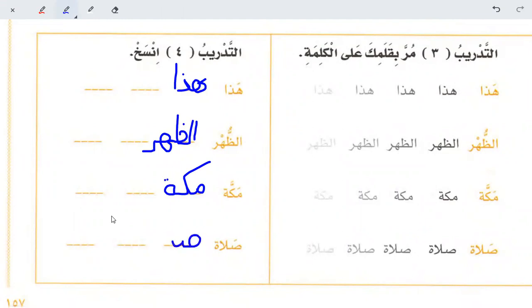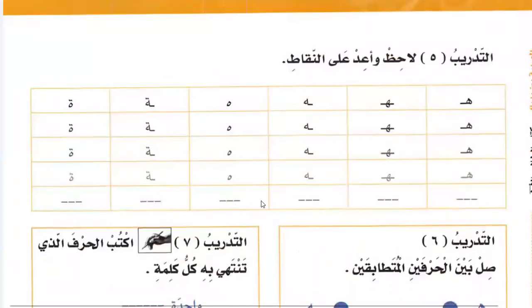Aleph will touch the line. Tab and Gota will touch the line only. Then pass your pen on these to improve your writing. All of them except this one will touch the line but not go below it. This one is half below the line, half above the line.